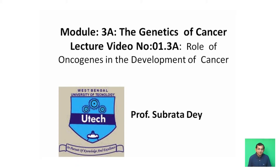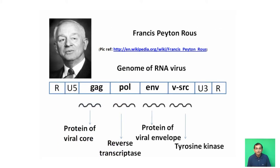What is meant by genetics of cancer? What is an oncogene? Peyton Rous, in the year 1910, gave the answer in his landmark experiment with Rous sarcoma virus. He discovered a tumor-inducing virus called RSV, or Rous sarcoma virus, which causes sarcoma in chicken — sarcoma being a cancer of connective tissue.